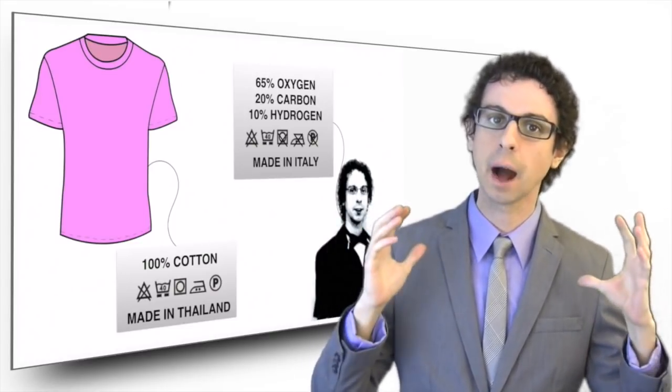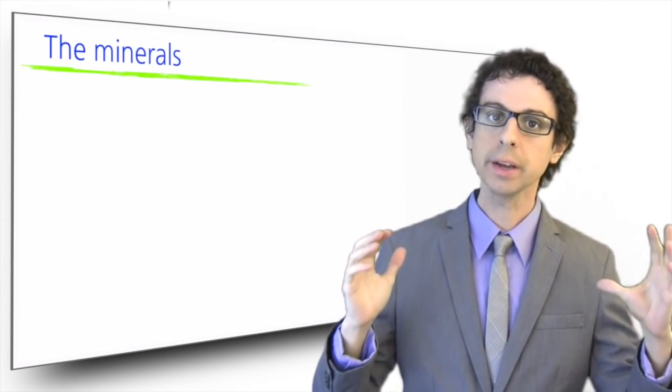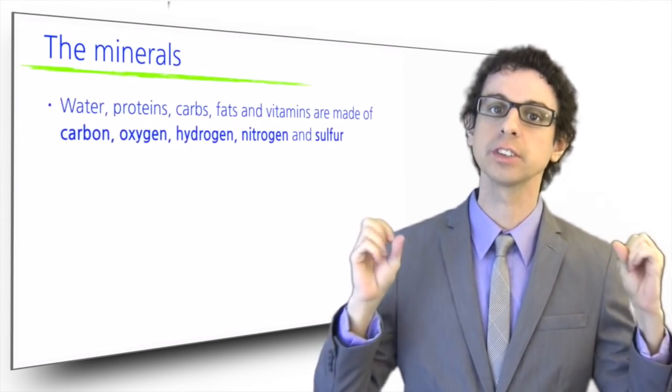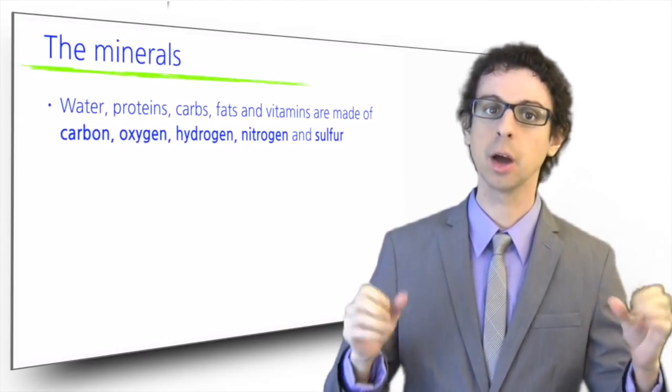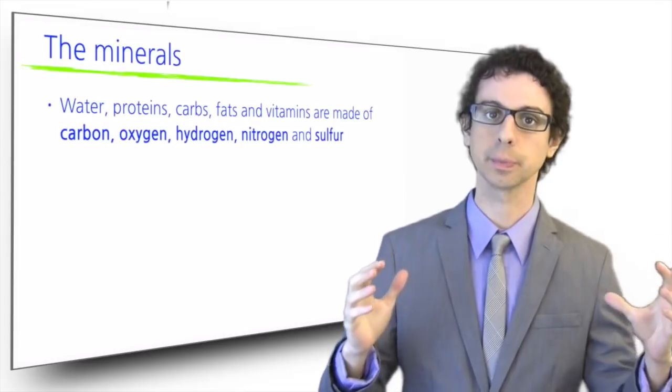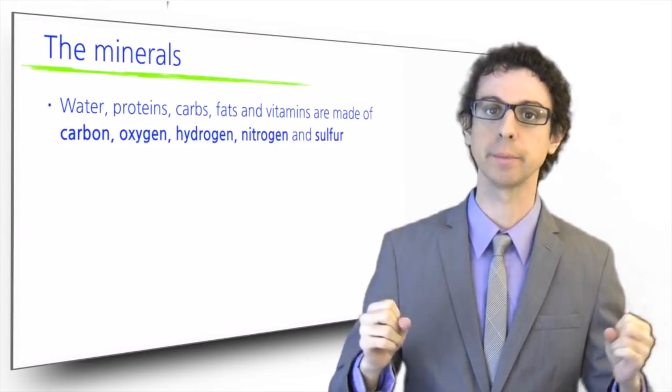Indeed, if we were to break down our body into the atoms it's made of, we would find we are made for the most part of just a handful of elements: oxygen, carbon, and hydrogen, with some nitrogen and sulfur. In the end, these five elements are the stuff we are made of.